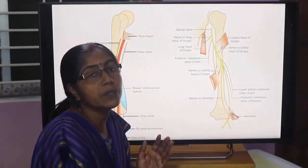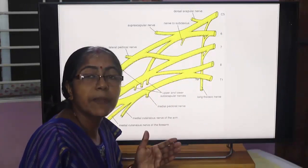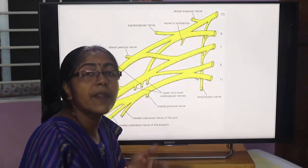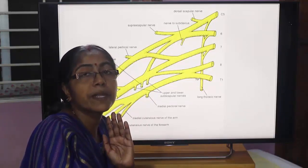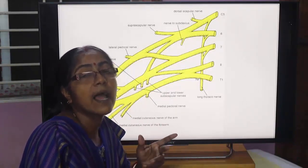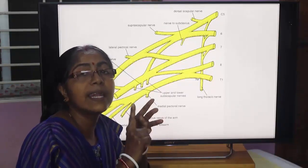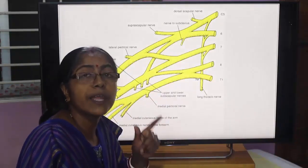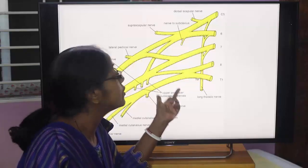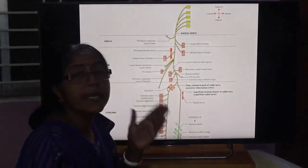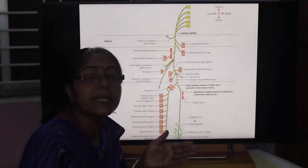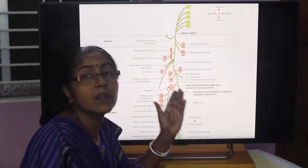The radial nerve is the nerve of the posterior compartment of the arm and forearm. The muscle of the posterior compartment of the arm is the triceps brachii, which has three heads: long head, lateral head, and medial head. The long head is supplied by a branch of the radial nerve arising from the axilla. The lateral head and medial head are supplied by branches arising from the spiral groove.